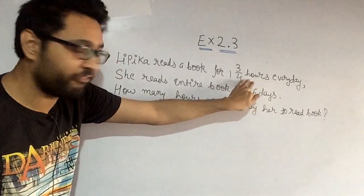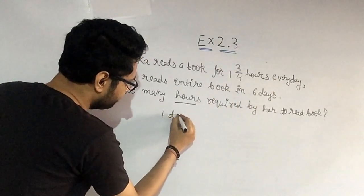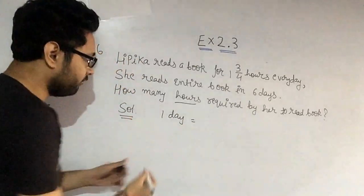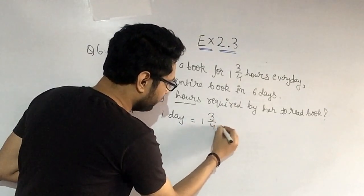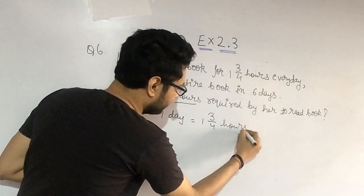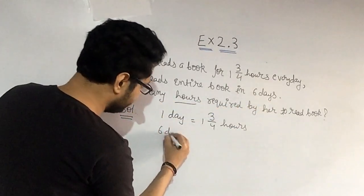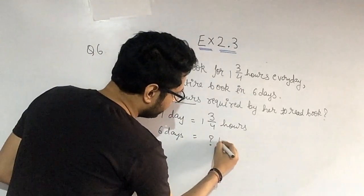But it is a fraction, so it is new. Every day means one day, here it starts. How many hours read? One day, three by four hours. We have to find how many days? Six days. Just here 6 days write, equals to question mark hours.